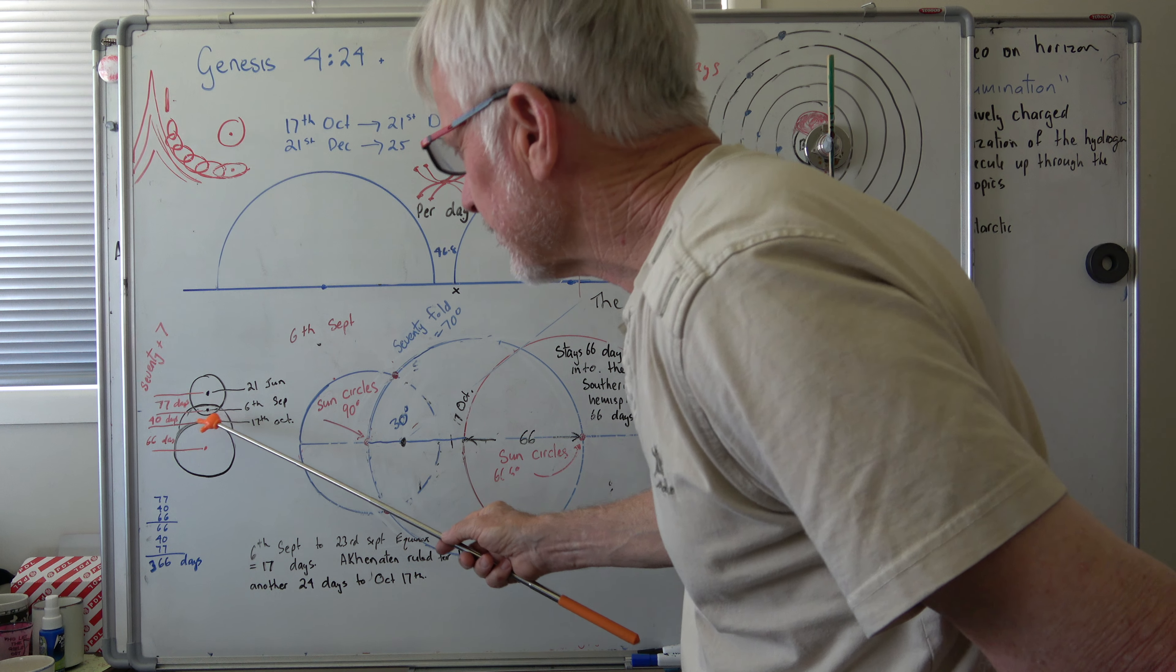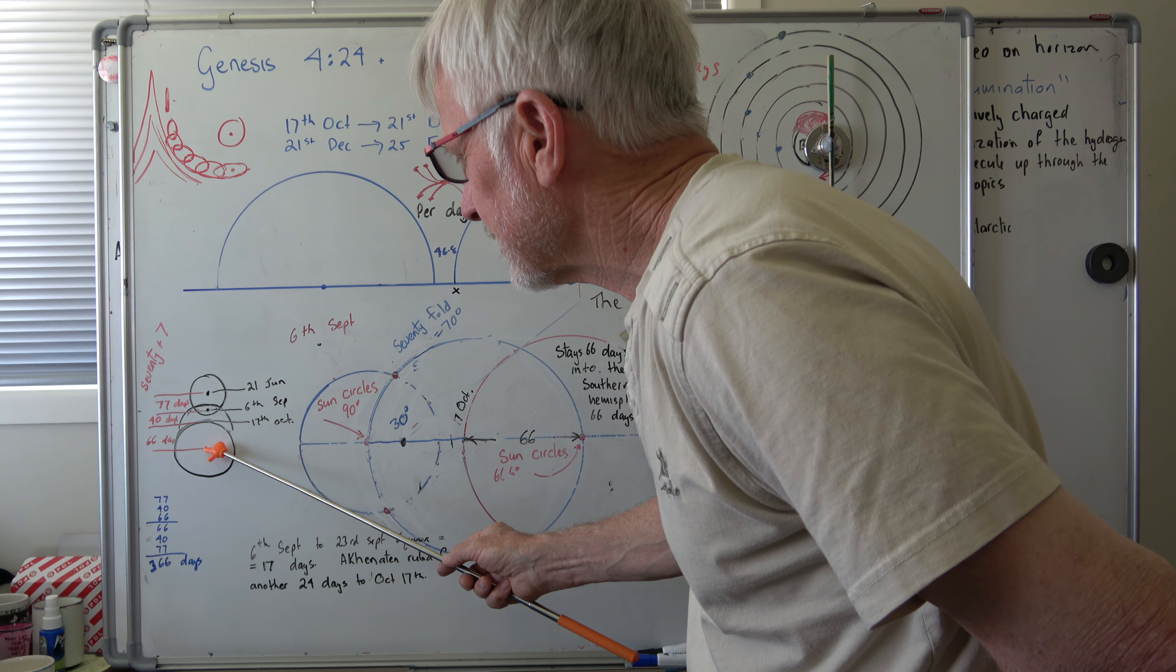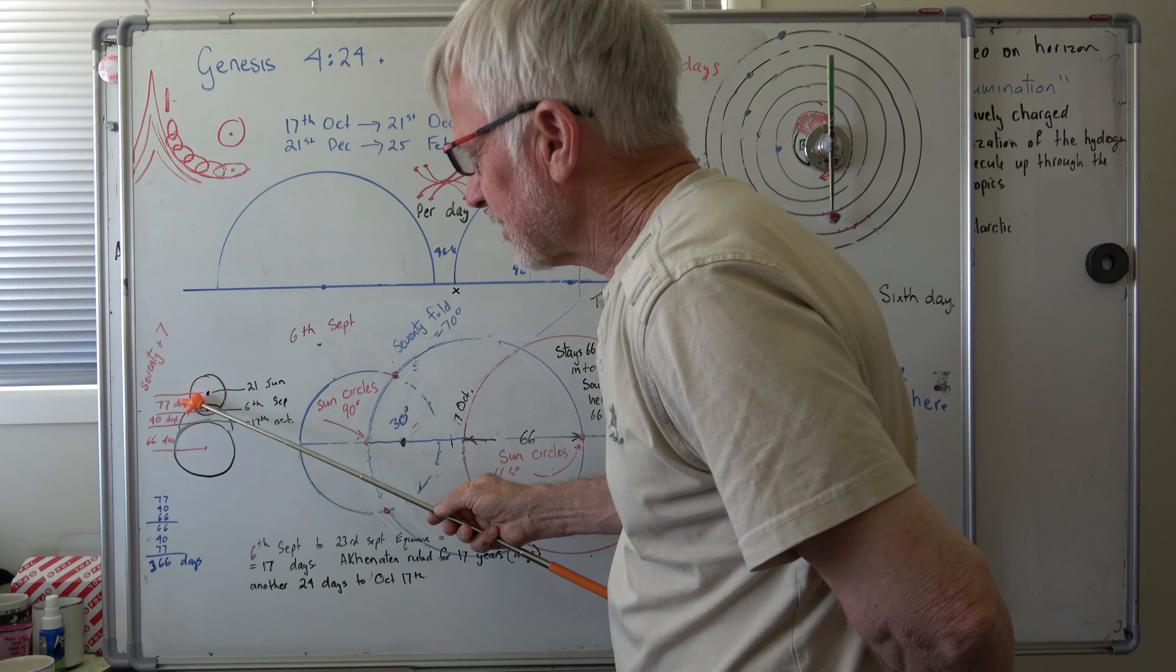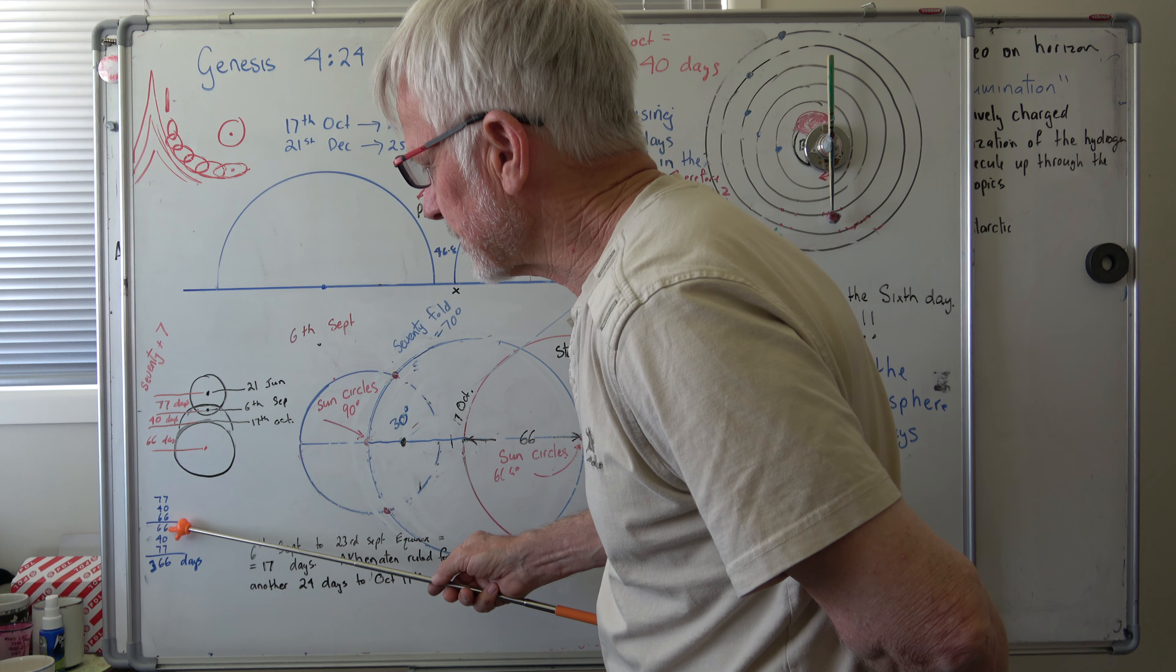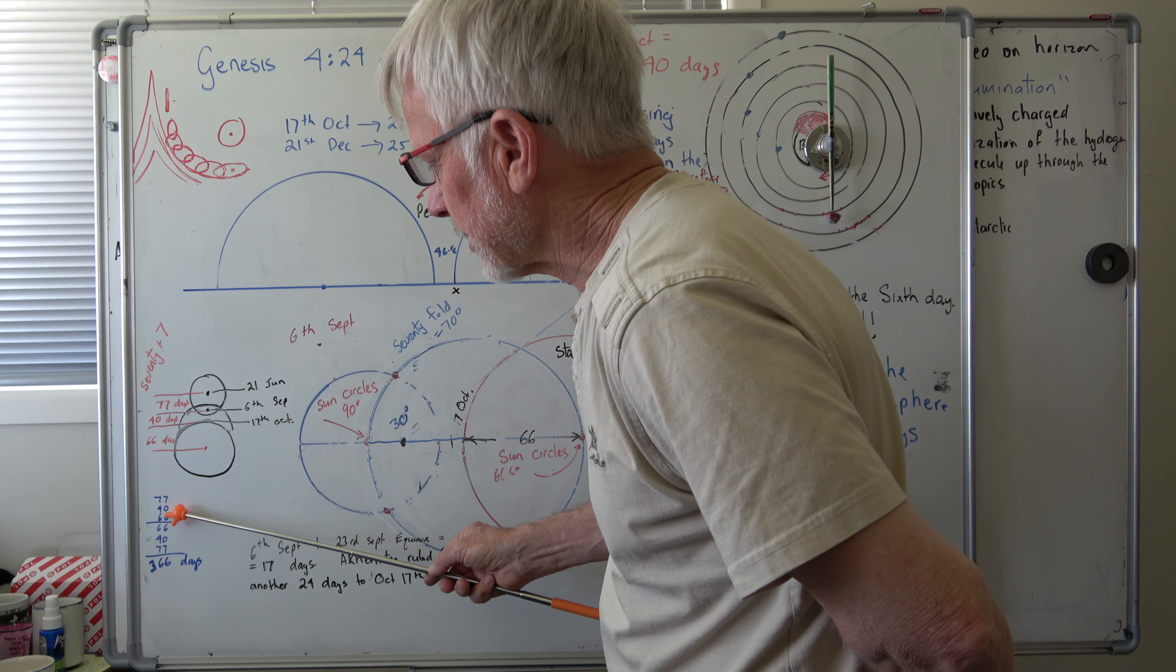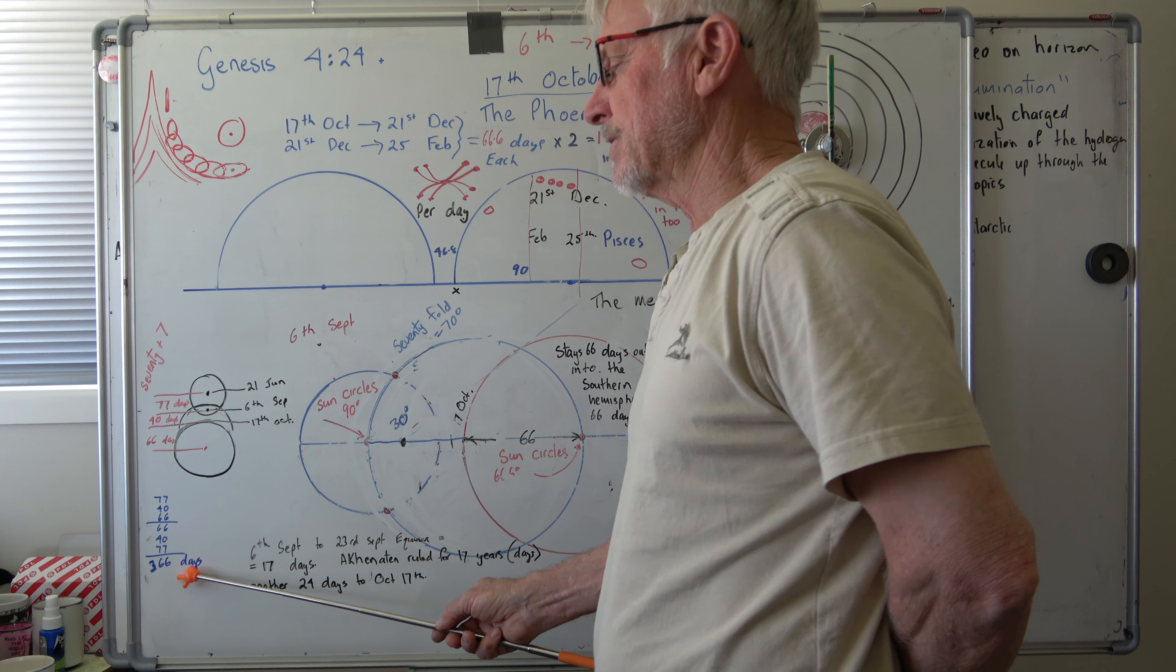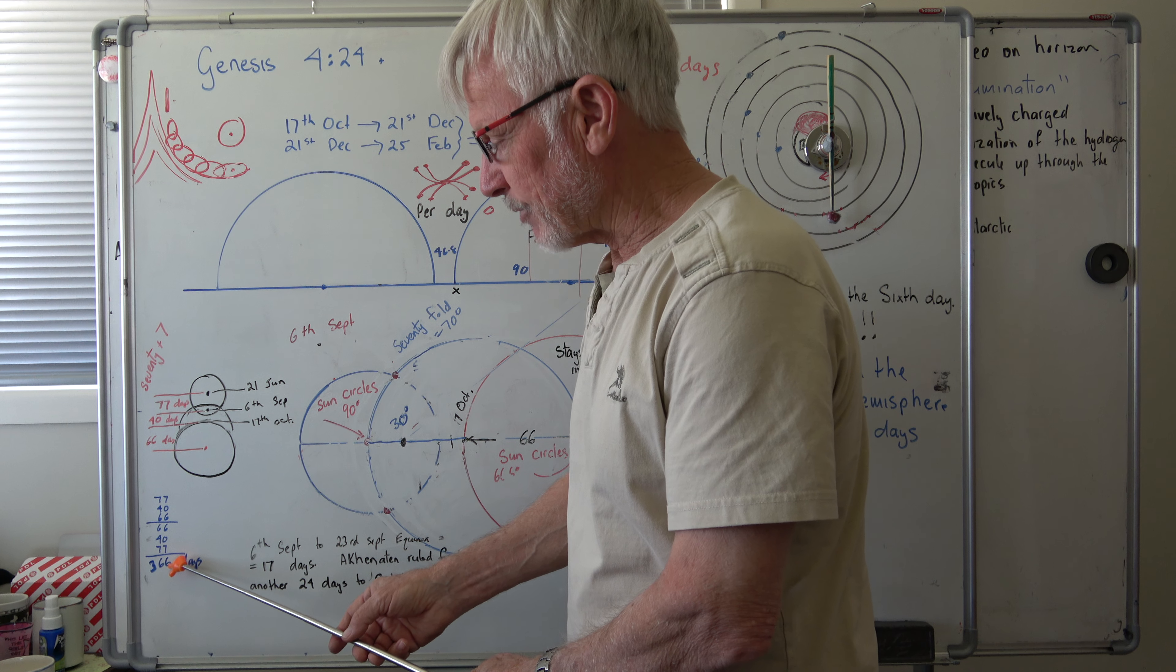Then you go from the 17th of October out to the southern hemisphere—66 days. So you've gone 77 days, the 40 days, the 66 days. And then you've got to return back up again, so you go 66 again to get back up, 40 again, and 77 again.